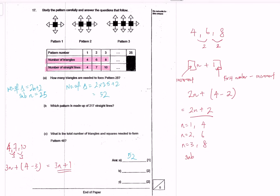So if you want to have 217 straight lines, that's the final number of straight lines. This would be 217, right? So let us write back in the box here. 3n plus 1 would give me 217. 3n would give me 216. n would be 72. So pattern number 72.